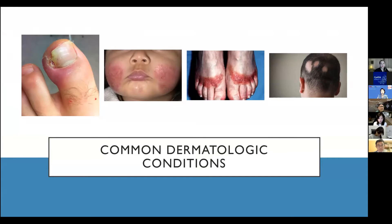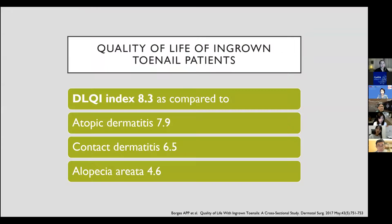Among the following photos, which conditions do you think has the highest impact on the quality of life of an affected patient? According to this journal, the Dermatology Life Quality Index of ingrown nail patients left untreated without an intervention has a score of 8.3 — higher than those with atopic contact dermatitis or alopecia areata patients.